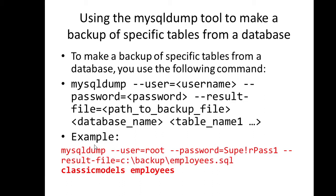To back up specific tables from a database, use the following command: mysqldump --user=username --password=password --result-file=path database_name table_name. For example: mysqldump --user=root --password=password --result-file=C:\backup\employees.sql database_name table_name. You can specify multiple table names after the database name — for example, employees, department, and attendance.